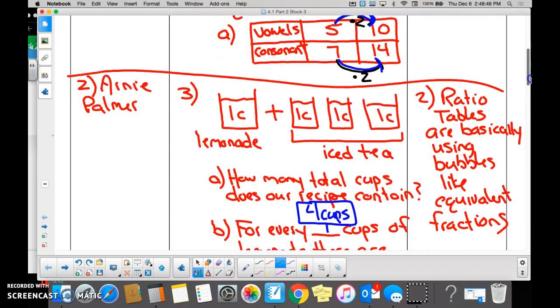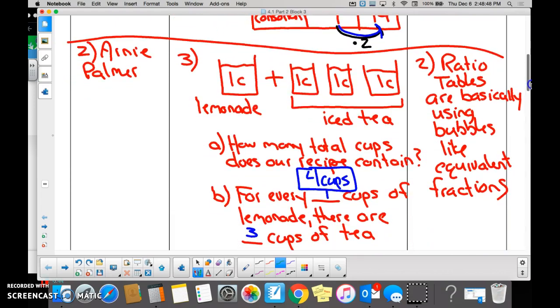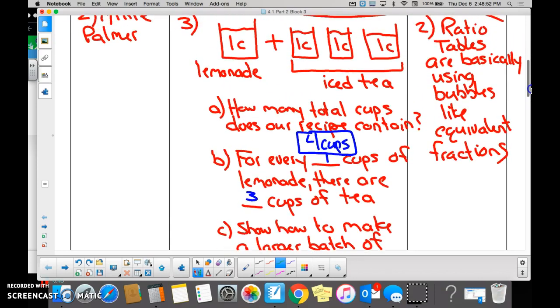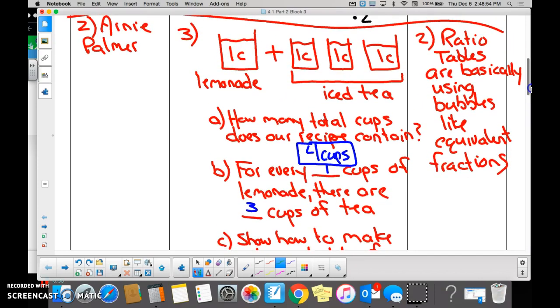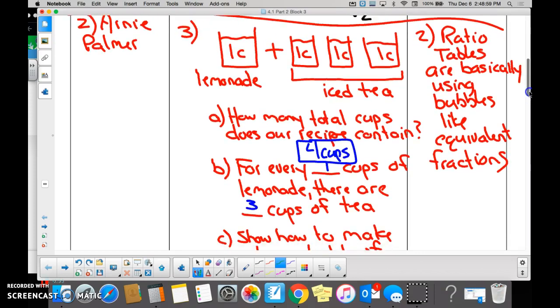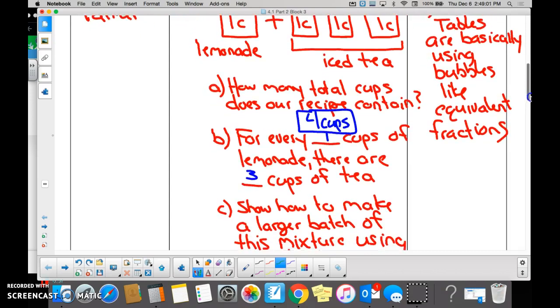The first thing we did is we talked about creating an Arnold Palmer, which is a mix of lemonade and iced tea. We drew a picture, or we drew a dark picture. Arnold Palmers have one cup of lemonade for three cups of iced tea, at least how I make them. All together, that's four cups. Whoever's clicking, stop clicking.